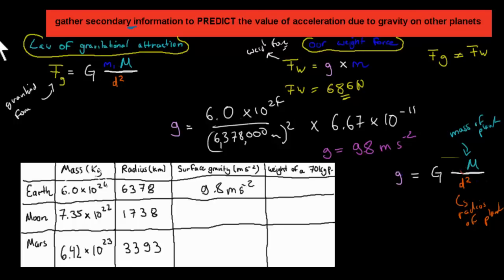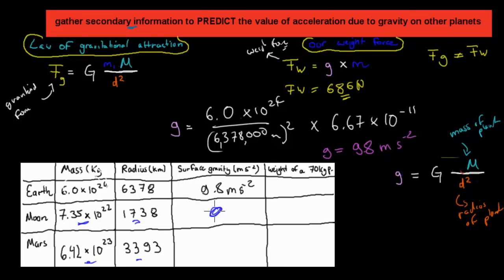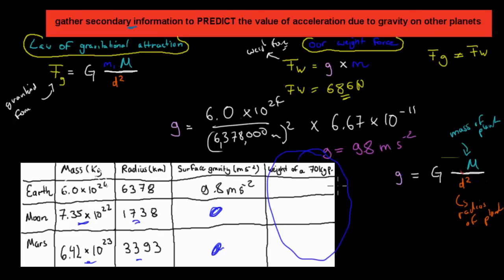What I want you to do now is use the values given for the Moon and for Mars, use this equation, and figure out the actual gravity experienced both on the Moon and on Mars — and see how it's different to what's experienced on Earth. We'll do this, and how we can measure weight, in the next video. I hope that was useful.